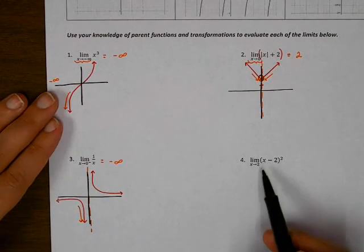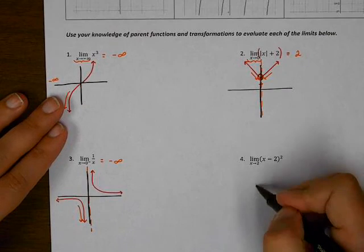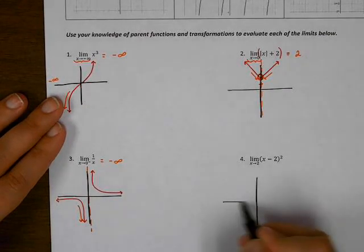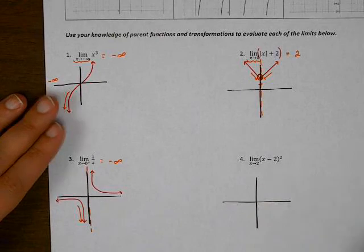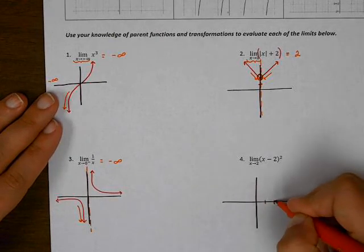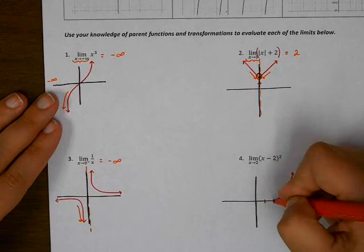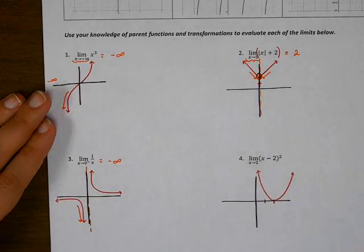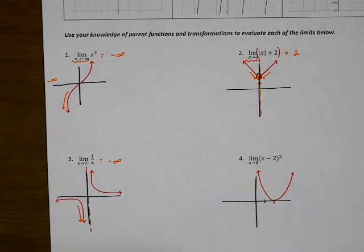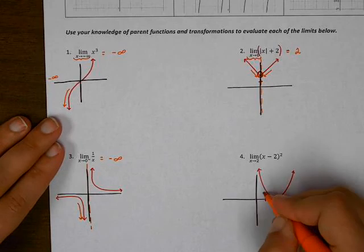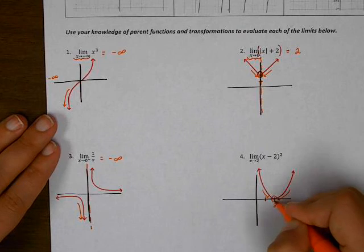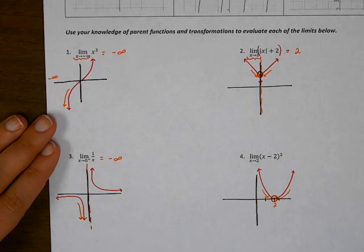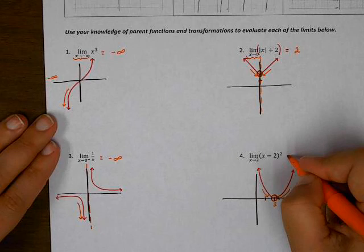Finally, if I want to check the limit as x approaches two of x minus two squared, what I'm going to do is sketch a picture. Now x minus two squared is a parabola that was shifted to the right two places. So here's my parabola. As I approach x being two from both the left and the right, because I need to check both sides, both sides are approaching this point right here which has a y value of zero.